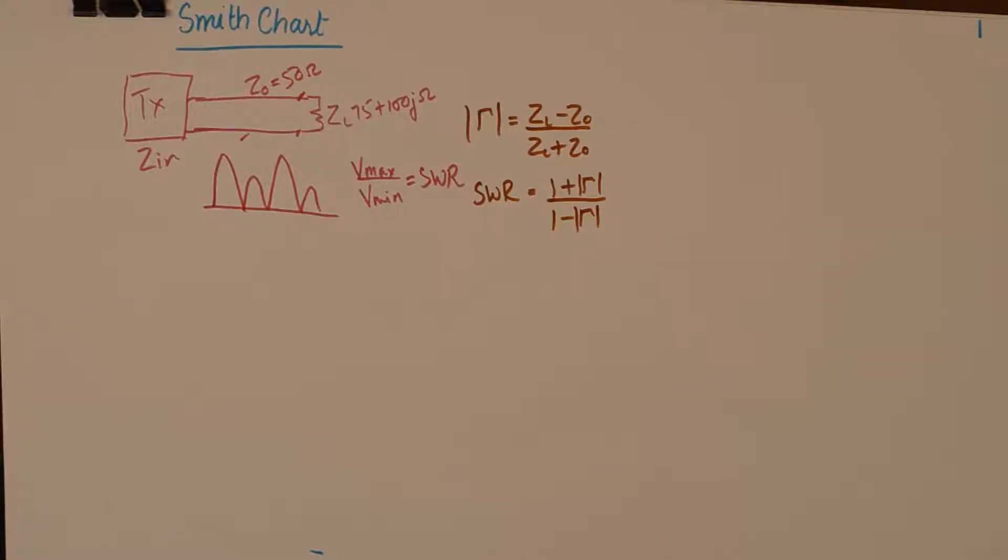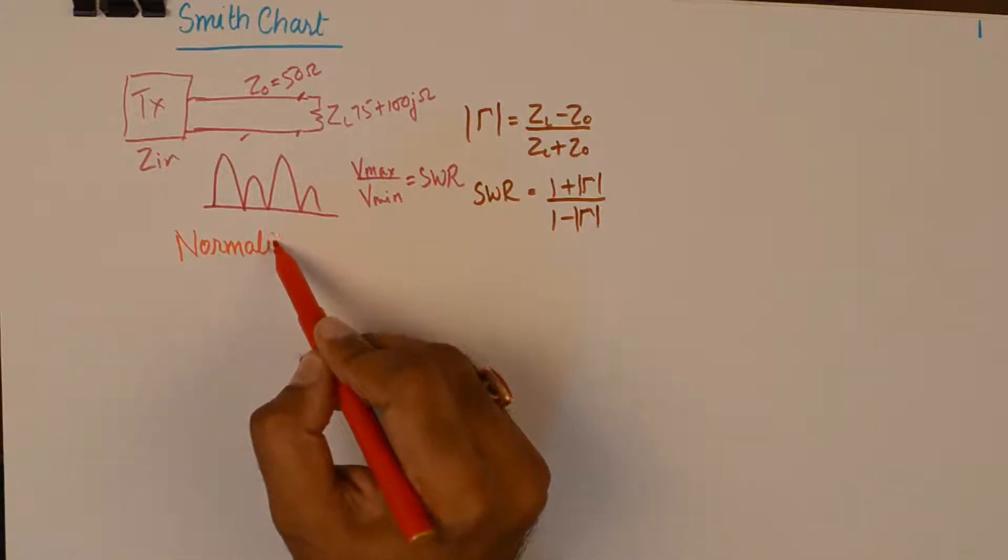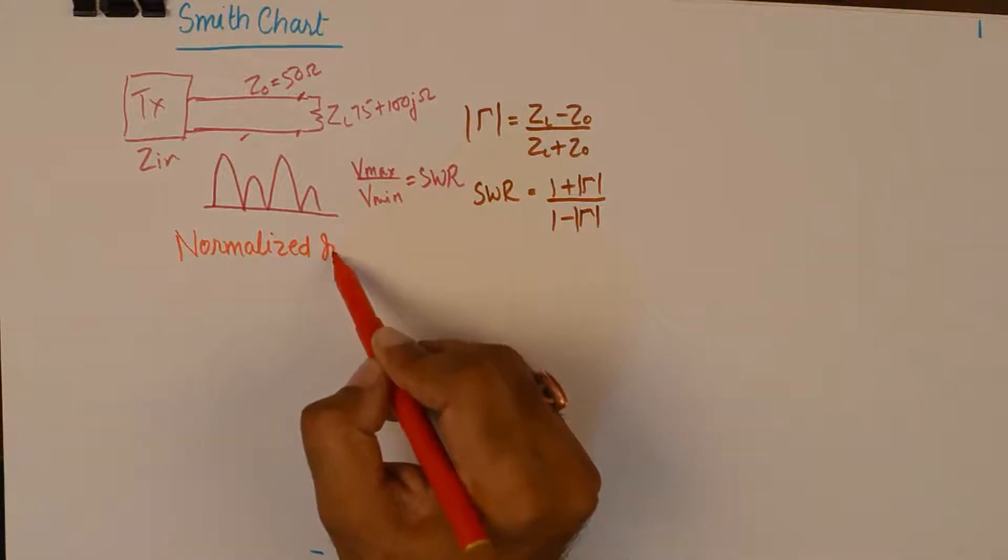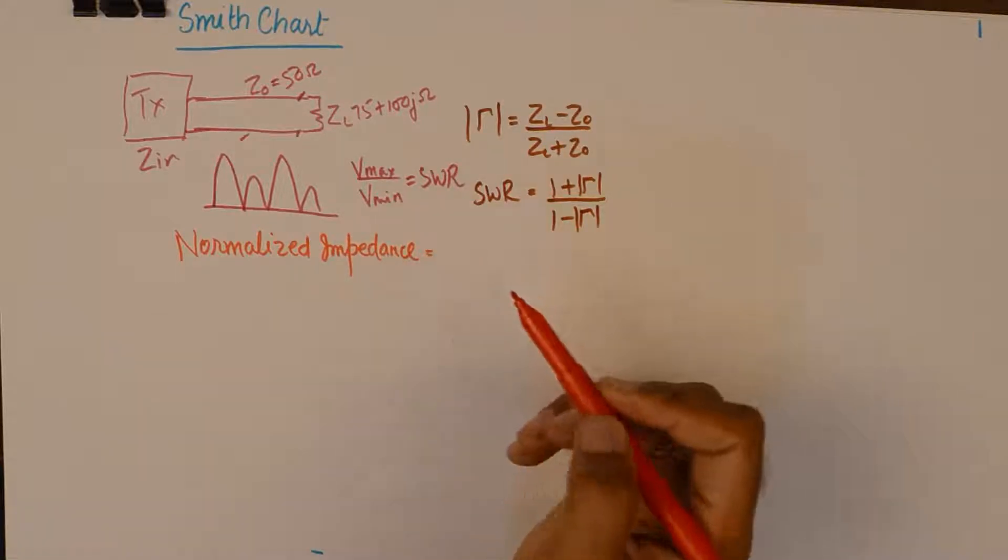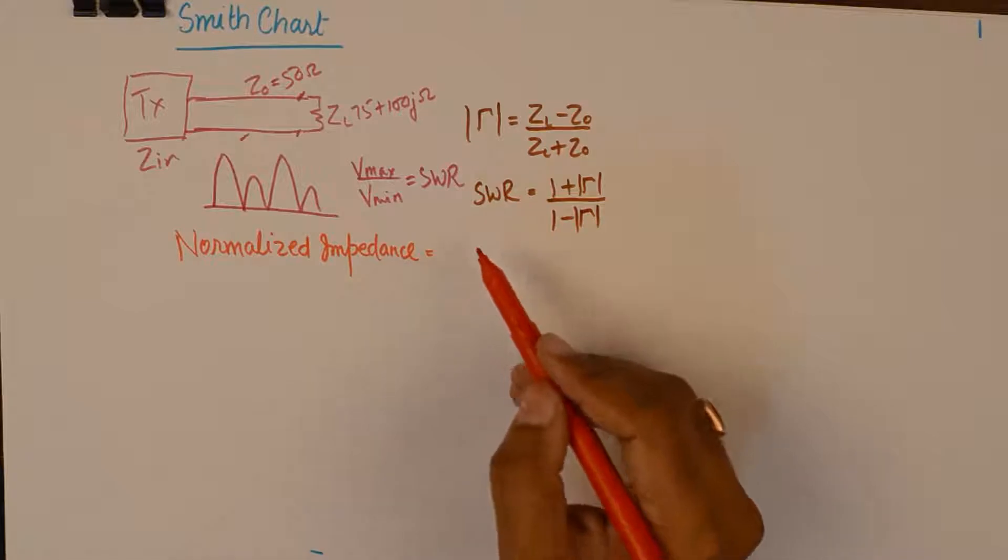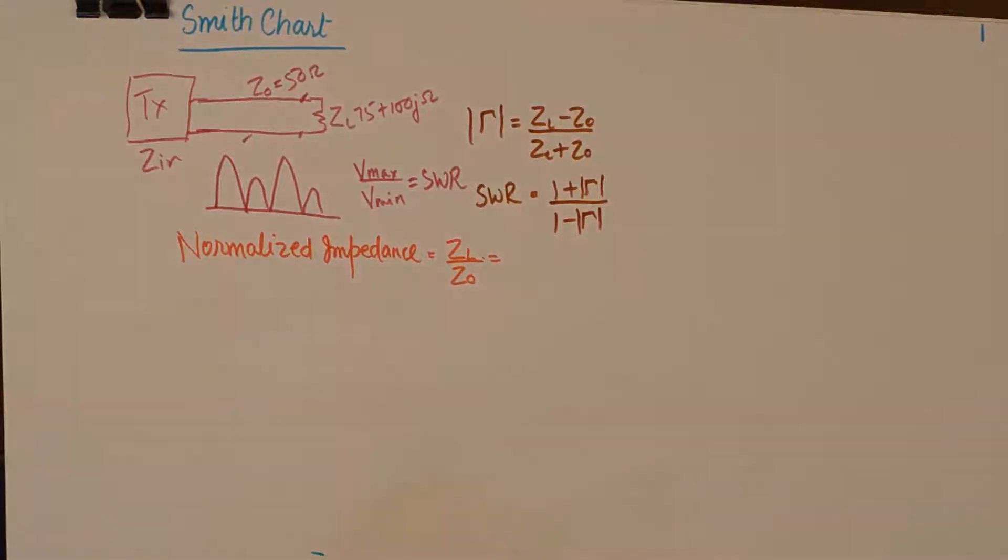Now, before we plot Smith's chart, we need to understand one more term which is known as normalized impedance. Normalized impedance is the ratio of load impedance to the characteristic impedance. And we plot normalized impedance on Smith's chart.